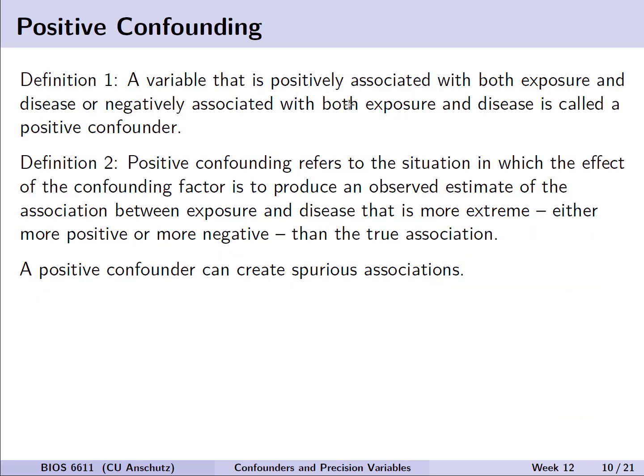Beyond identifying confounders, it's useful to introduce terminology for types of confounding. Positive confounding occurs when a variable is positively associated with both the exposure and disease, or both negatively — going in the same direction. Positive confounding produces an observed estimate of the association between exposure and disease that is more extreme than the true association. In other words, we can create spurious associations, identifying things that appear meaningful when they are in fact not actually there.